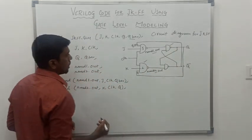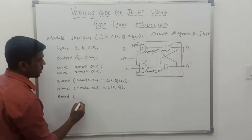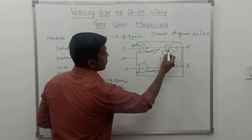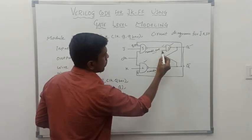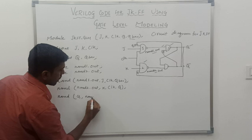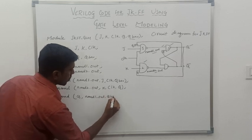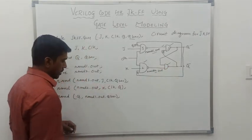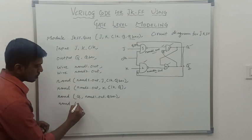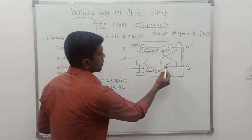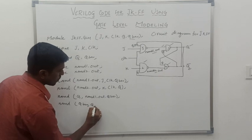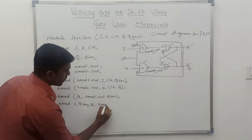Now we go to the third NAND gate. Here the output is Q — Q is the output of the third NAND gate. Input of the third NAND gate is NAND 1 out as one input and another input is Q bar. So we write NAND 1 out comma Q bar. Then we go to the fourth NAND gate. In this fourth NAND gate the output is Q bar. Input of the fourth NAND gate is Q as one input, and another input is NAND 2 out.